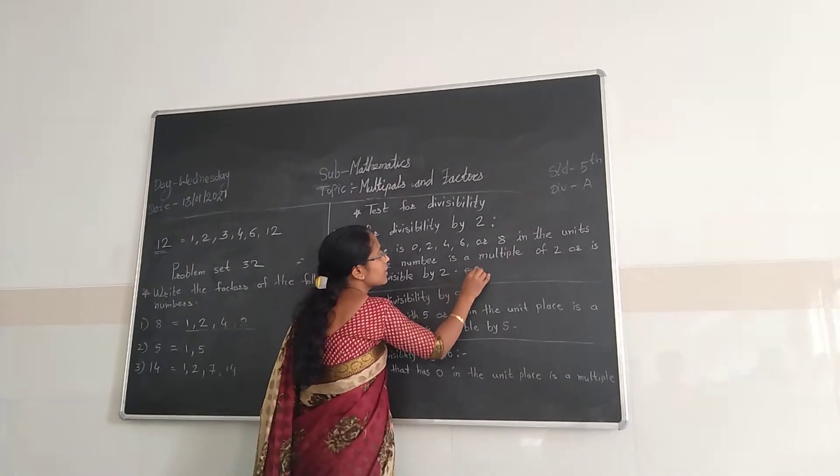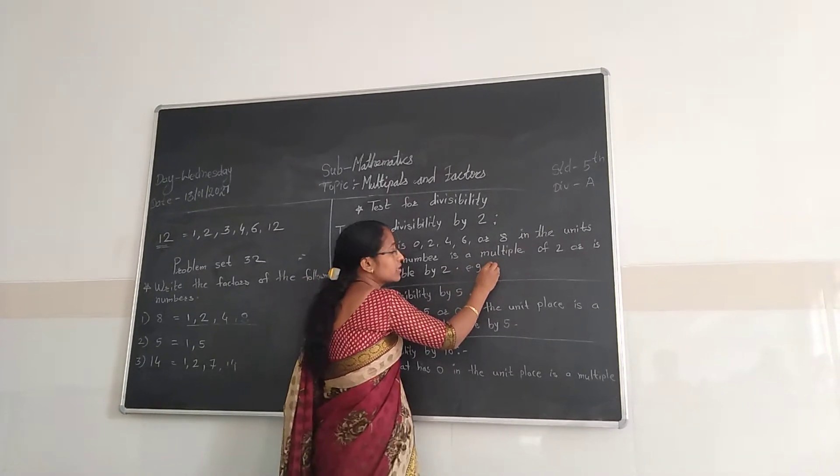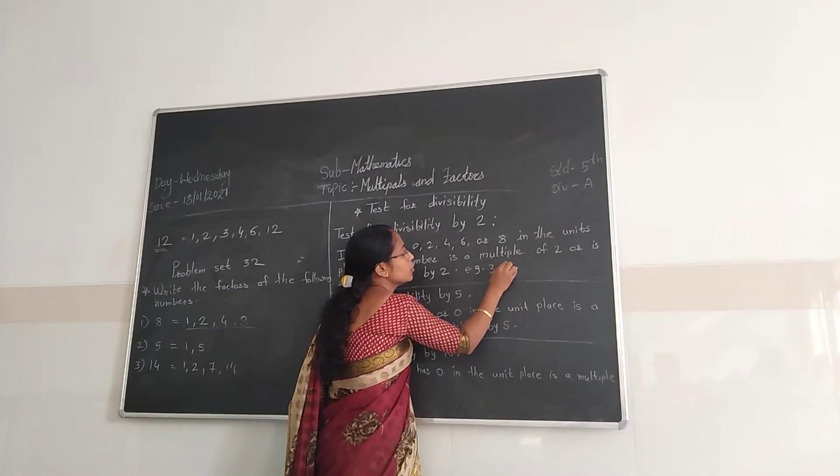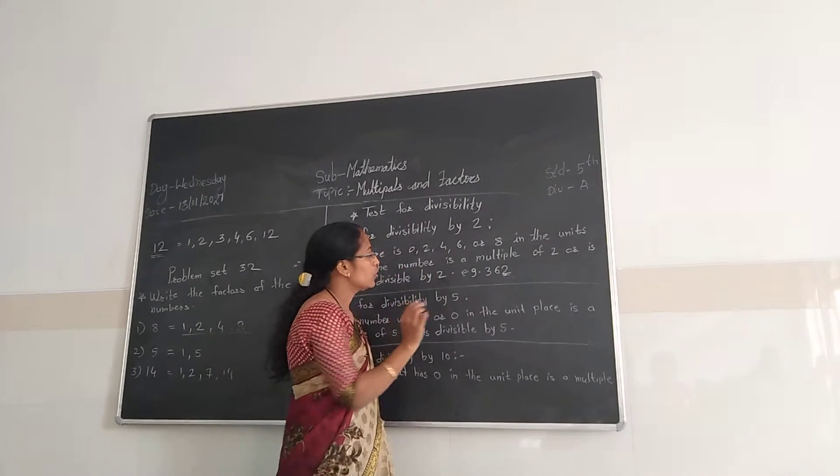For example, the number is 362. Unit place is 2, then it is divisible by 2.